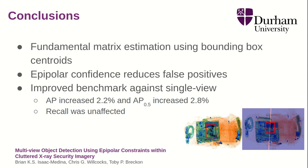In conclusion, we were able to estimate the fundamental matrix using only bounding box centroid annotations. With this, we built an epipolar confidence that reduced false positives and improved our benchmark over single-view detection, increasing average precision by 2.2 percent. The average precision at IoU 0.5 increased by 2.8 percent, and recall was practically unaffected. Thank you very much.